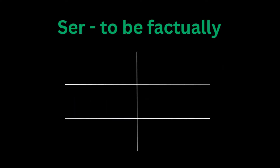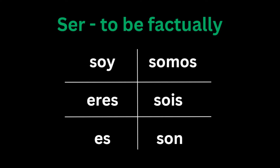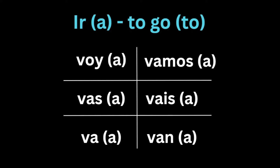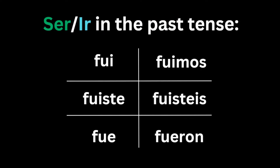The verb ser means to be, as in being and having traits about oneself, and the syntax of this verb in the present tense has six different conjugations for the six pronouns. The verb ir, however, means to go and sometimes can be referred to as to go to, but its syntax is completely different in the present tense from the verb ser.